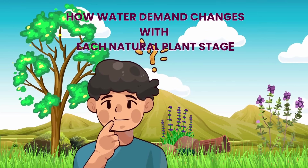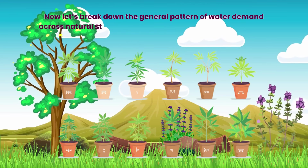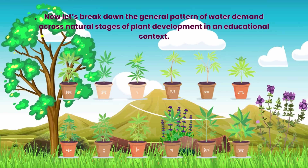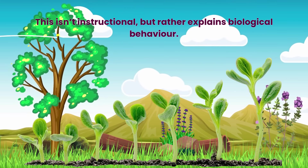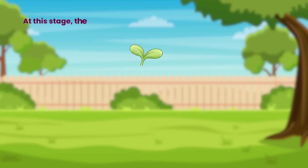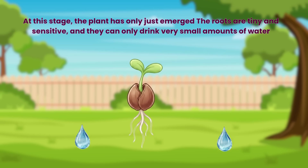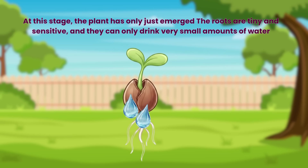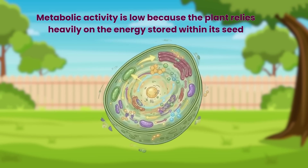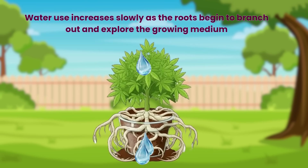How water demand changes with each natural plant stage. Stage 1 — Early Seedling. At this stage the plant has only just emerged. The roots are tiny and sensitive, and they can only drink very small amounts of water. Metabolic activity is low because the plant relies heavily on the energy stored within its seed. Water use increases slowly as the roots begin to branch out and explore the growing medium.